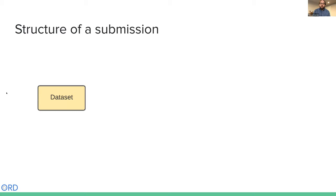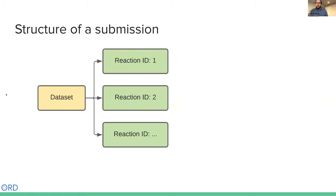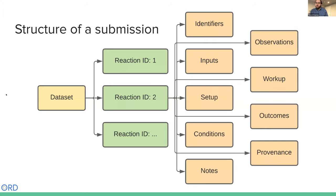At the top level, we have a data set — a collection of reactions that might all come from the same publication or be part of the same high-throughput experiment. Each reaction is composed of many different subfields. The first column describes things you might write down as part of setting up the reaction — what you're putting in and the conditions. The second column describes things that happen as the reaction is going on and at the end, recording products and analytical signals to determine yields and conversions.